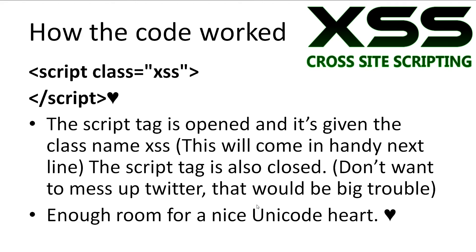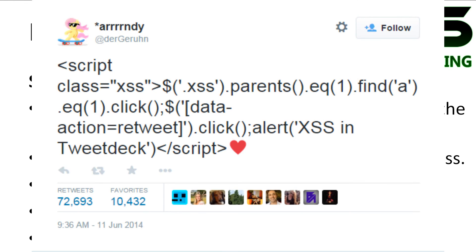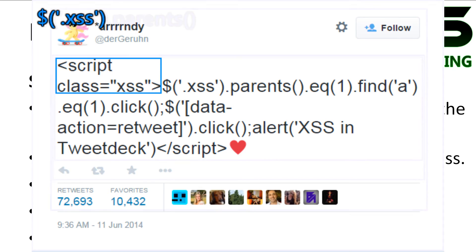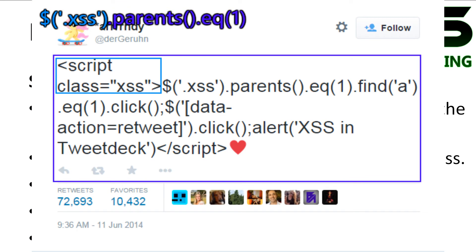Then we have the closing script tag. If you left this off, it would probably mess up the whole page for anyone who would view it, which would get you in big trouble. There was even enough leftover room to place a Unicode heart at the end of the tweet. Here's the first line of the script. Using the jQuery dollar sign to select any element on the page with the class XSS — this script was given the class name XSS. Then, get a list of all of the parent tags that encase this class, such as the text area of the tweet, the whole tweet box, the tweet frame, then the tweet stream, etc. Then we retrieve the second parent tag. Remember that arrays and lists start from 0, so 1 is the second element.